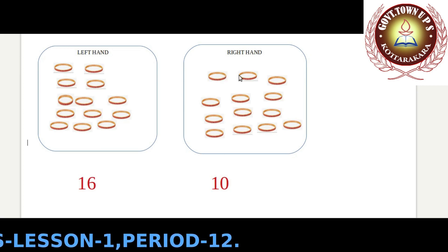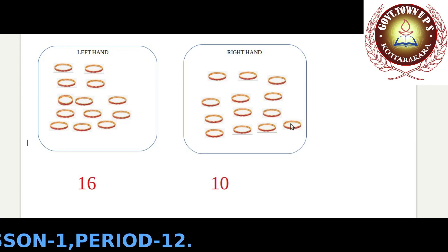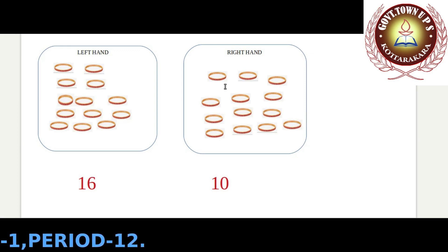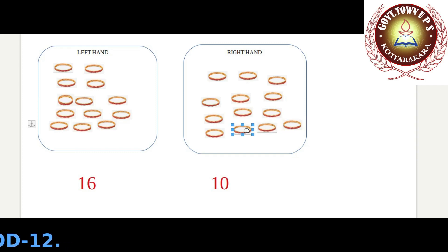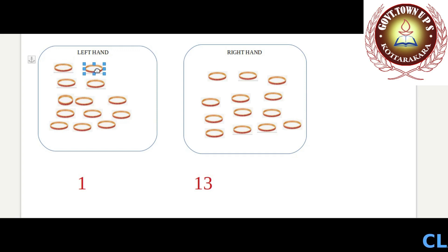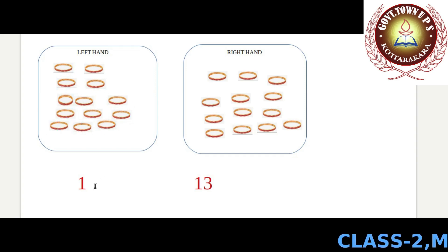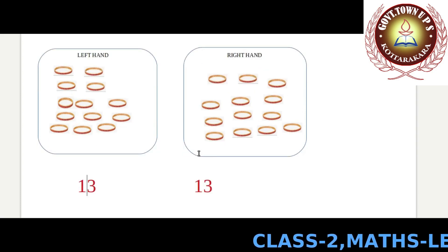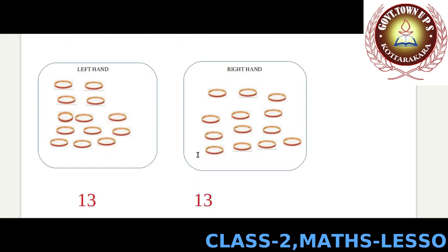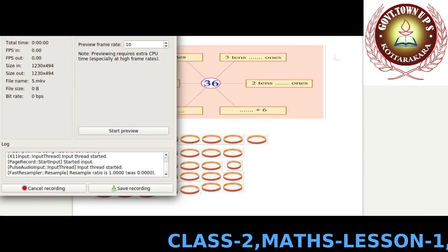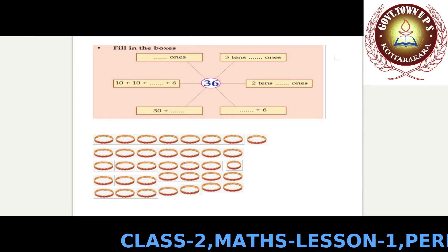If we have 13 bangles in the right hand, how many in the left hand? Let's count: 1 through 13. So 13 bangles in the left hand and 13 in the right hand. You can find many ways to wear 26 bangles — 13 in each hand, or 16 in the left and 10 in the right, and so on.